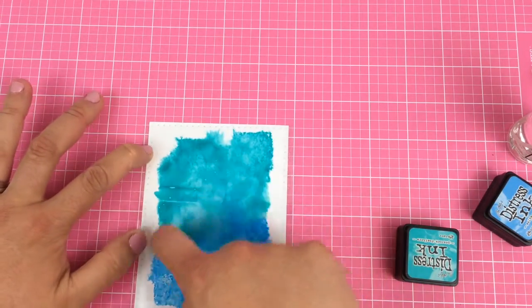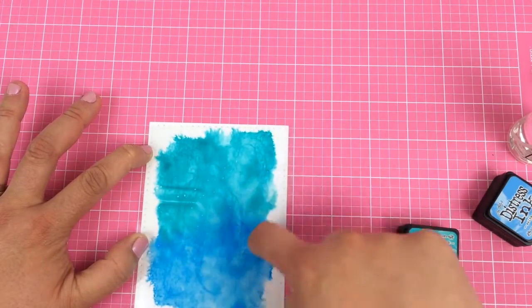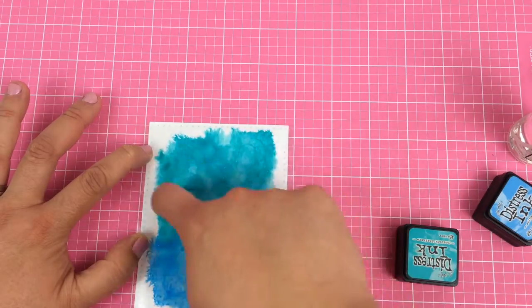You're basically going to scribble right on top, and what it does is trap the distress ink and trap that design. I'll show you here in a second. It really gives some nice texture.